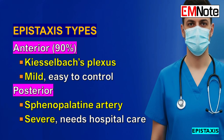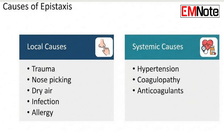In that group, a posterior bleed is a true medical emergency. Now let's talk triggers — starting with local factors. The most common is simple mechanical trauma: a direct blow to the face or nose, but also repetitive damage — nose picking, digital trauma — which is a huge factor.